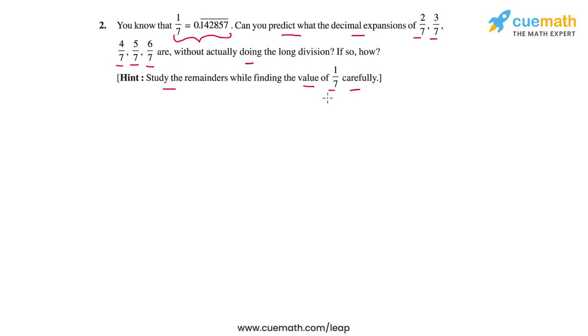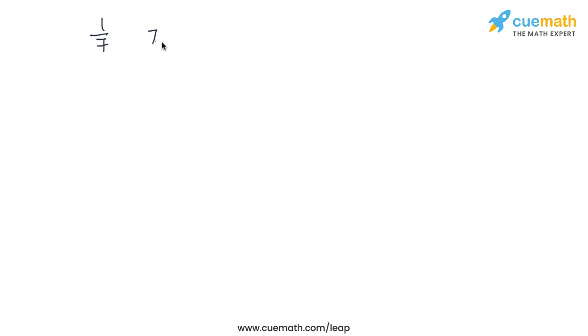Let's start by doing long division to find out 1 by 7 first. To find 1 by 7, the divisor is 7 and the dividend is 1. Because 1 is less than 7, we put a decimal point and add a 0. So the first multiplier will be 1, giving us 7 and leaving a remainder of 3.